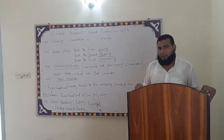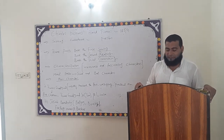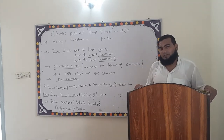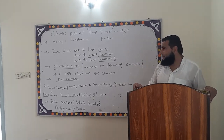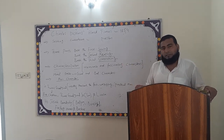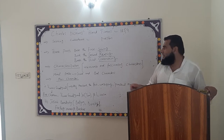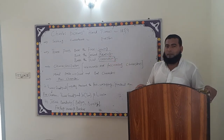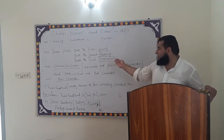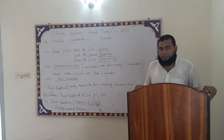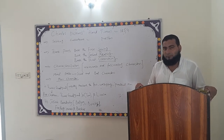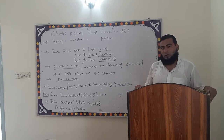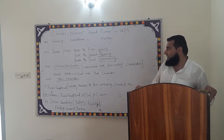So this lecture is for the novel. There are three parts in this very novel — basically three books. The first book, the second book, and the third. The three parts are book one, book two, and book three — and it's all about Sowing, Reaping, and Garnering. So this is what it is all about.